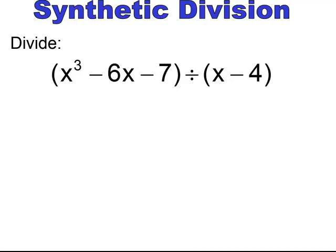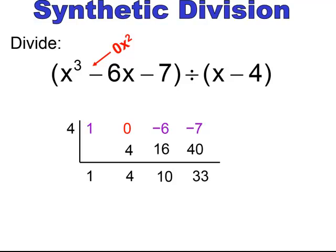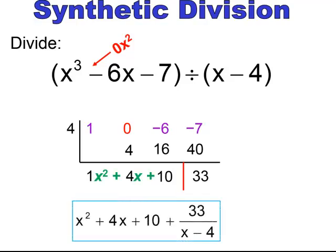Pause and try. Again, what's missing here is the x squared, so put a 0 in. Don't forget to do the opposite of the divisor — it's negative 4, so it's going to be positive 4. Put all the coefficients in: 1, place marker 0, negative 6, negative 7. Bring the first number down. 4 times 1 is 4 — put it in the next column. Add down. 4 times 4 is 16 — put it in the next column. Add down, you get 10. 4 times 10 is 40; add down, you get a remainder of 33. Add your variables back in, reducing by one exponent. You get x squared plus 4x plus 10 plus 33 over x minus 4.